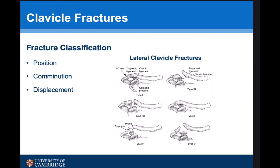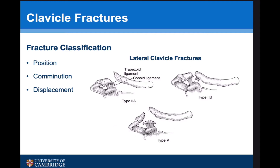For lateral clavicle fractures, the important types are type 2A and 2B and type 5. These fractures occur just medial to the coracoclavicular ligaments or involve just the conoid ligament. They are akin to an AC joint dislocation in that the medial part of the clavicle has an unopposed pull of trapezius, so it tends to get displaced. Type 2 and type 5 lateral clavicle fractures therefore tend to go on to non-union and require surgery.